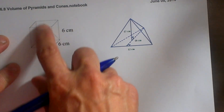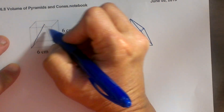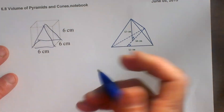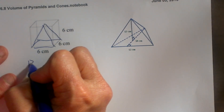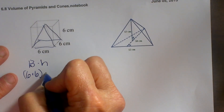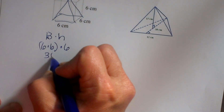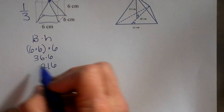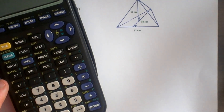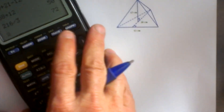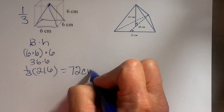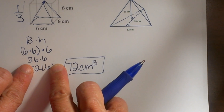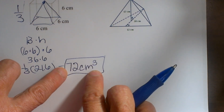Let's find the volume of a pyramid inside a cube. The base area is 6 times 6 equals 36, and 36 times the height of 6 gives 216. But since it's a pyramid, we take one third: 216 divided by 3 equals 72 centimeters cubed. The associated prism is 216 cm³ but the pyramid is only 72 cm³.